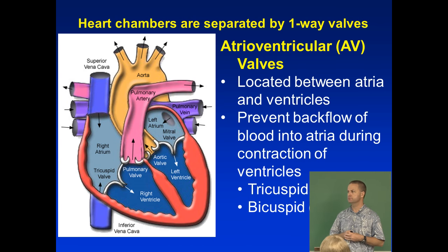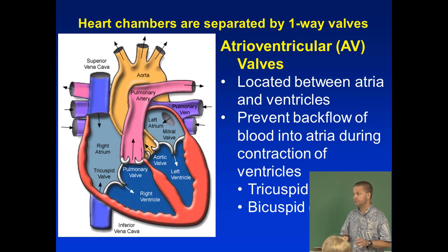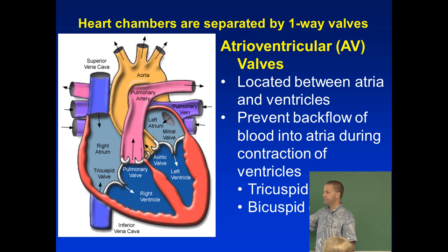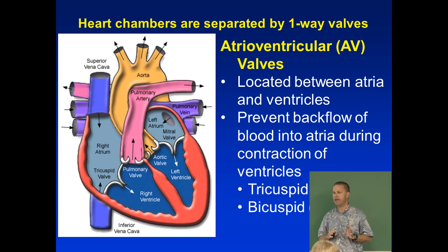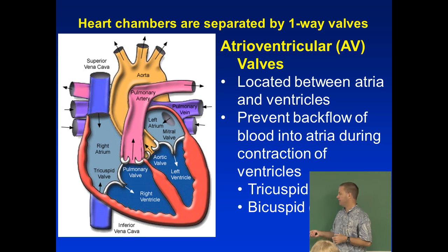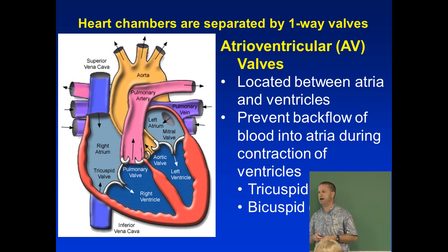Between the atria and ventricles we have atrioventricular (AV) valves. Valves prevent blood from going backward. When the ventricles contract during systole, the AV valves snap shut so blood goes out the aorta or pulmonary trunk rather than back into the atria. There's one AV valve on each side: the tricuspid on the right and the bicuspid (or mitral) on the left. A memory trick: 'tricuspid' and 'right' both contain the letter R.